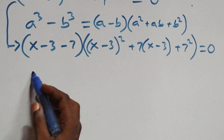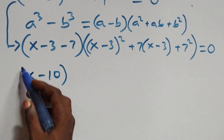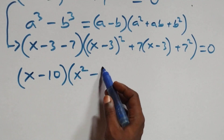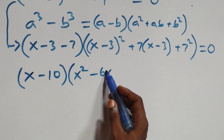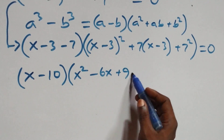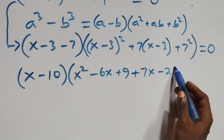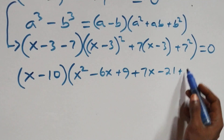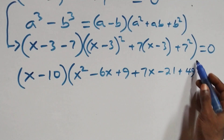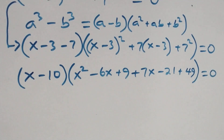This becomes x minus 10 in brackets, then open brackets, expansion gives us x squared minus 6x plus 9, then plus 7x minus 21, then plus 7 squared which is 49, close bracket, equals to 0.